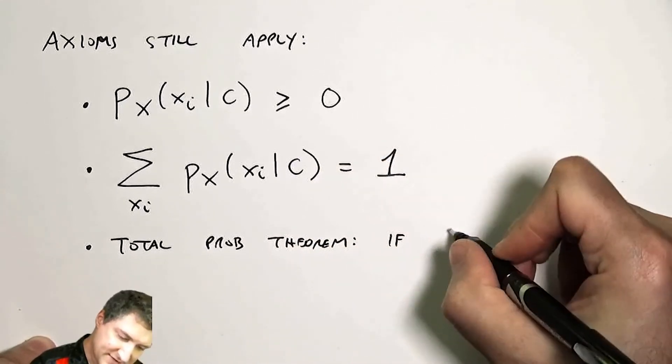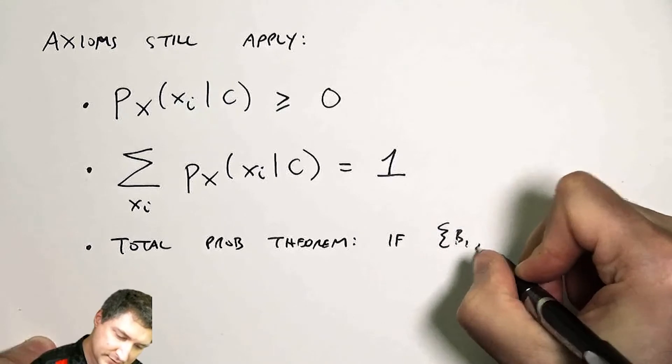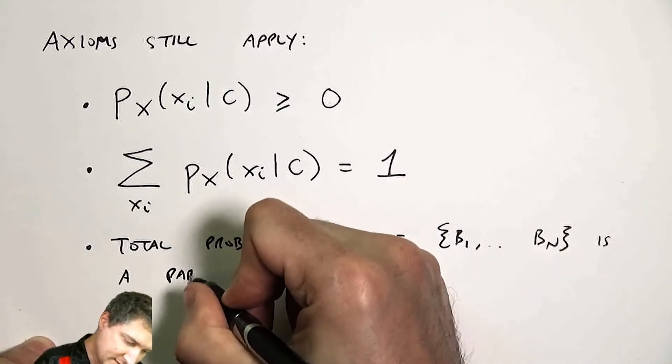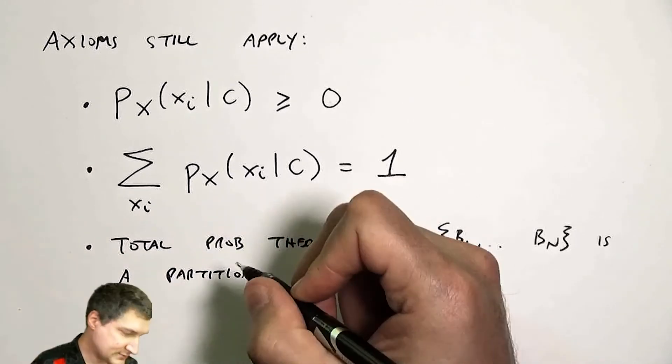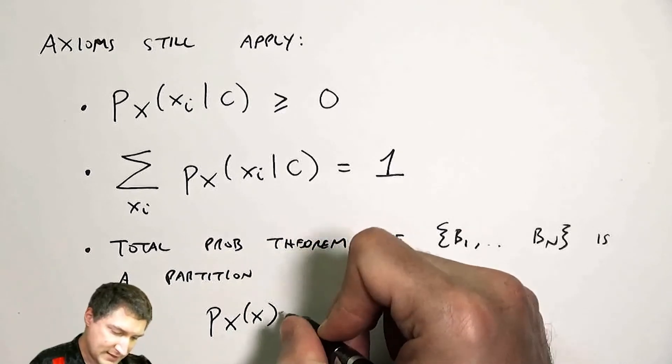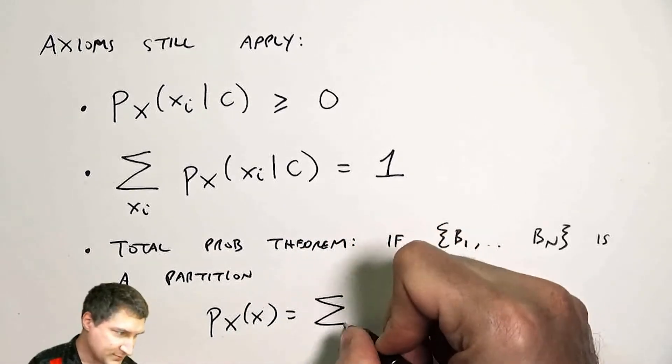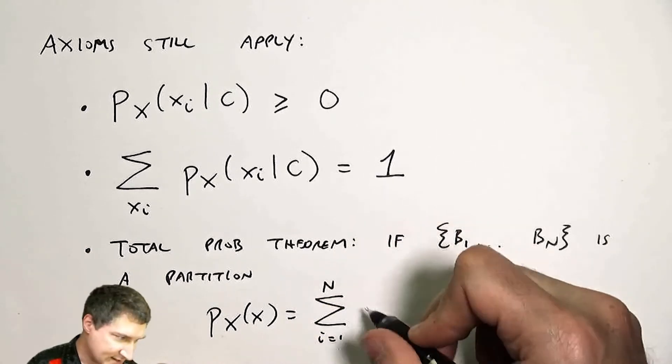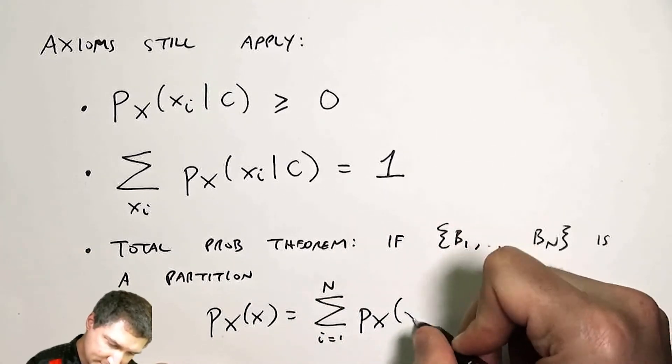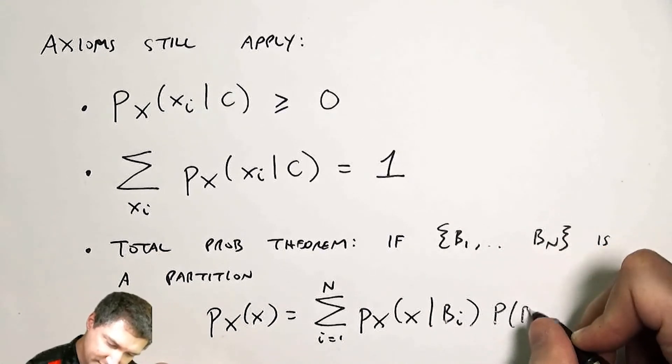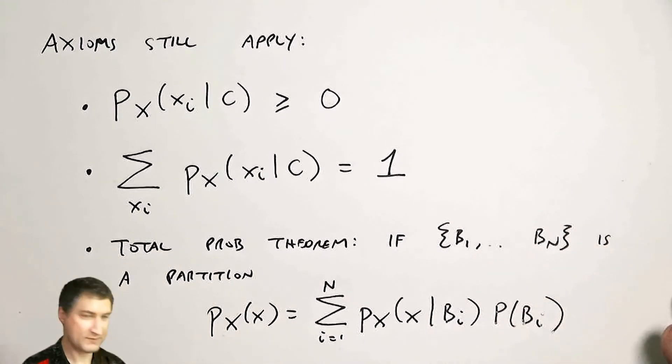And then I still have the total probability theorem, which says that if I have a partition, then I can express the overall probability as the sum over all of these subclasses times the probability of each thing.